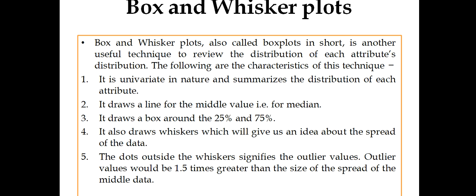In the case of up to 25%, 0 to 25%, at the 25% we have one box. And again, one underline box at 75%. And the middle one you already got, that is median. From minimum, we have 25%, and after that median, then we have 75%, then we have maximum. It also draws whiskers, which will give us an idea about the spread of the data.